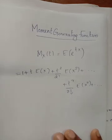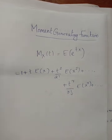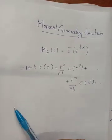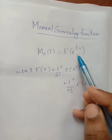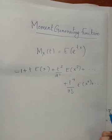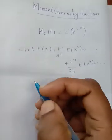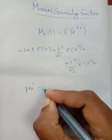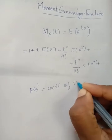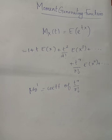The expansion of e raised to x is 1 plus x over 1 factorial plus x squared over 2 factorial, and so on. Applying this, the expectation of e raised to tx expands to 1 plus t·E(x) plus t squared over 2 factorial times E(x squared) plus etc. In general, mu r-prime is the coefficient of t raised to r over r factorial in the expansion of M_X(t). The coefficient of t raised to r over r factorial gives the r-th raw moment of X.